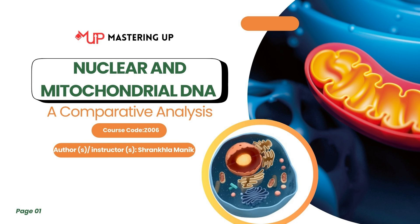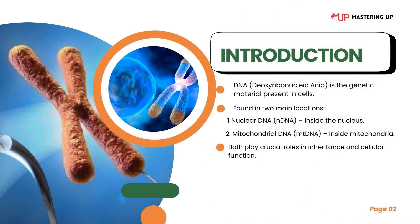Let's dive into their functions and essentials. DNA, which stands for deoxyribonucleic acid, is the genetic material found in living organisms. Genetic material means the set of instructions inside our cells that tells our body how to grow, work, and stay alive. Inside our cells, we actually have two types of DNA: nuclear DNA and mitochondrial DNA, which we call mtDNA. Even though both types are made up of the same chemical building blocks, they are quite different in terms of where they are located, how they are inherited, and what they do.